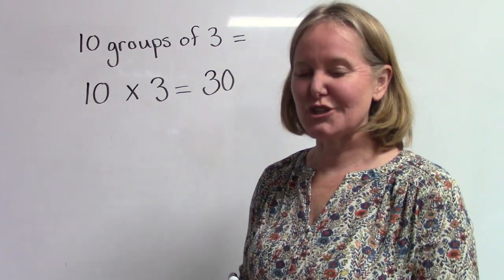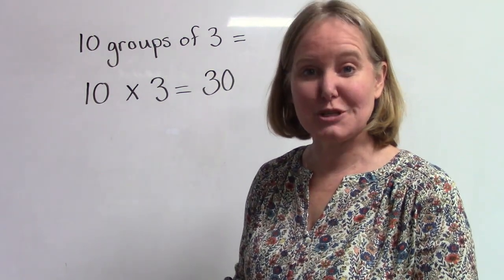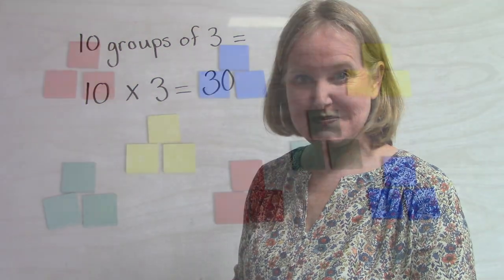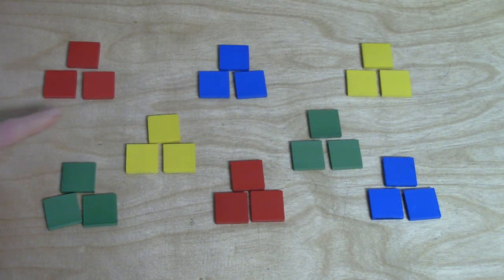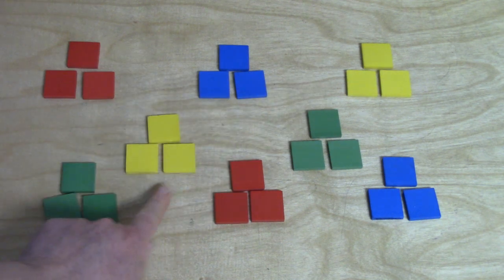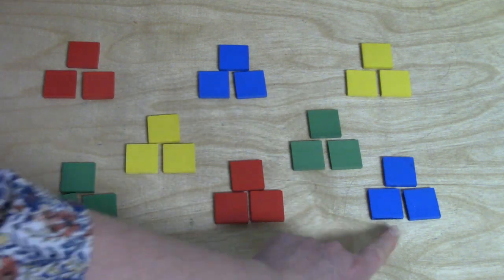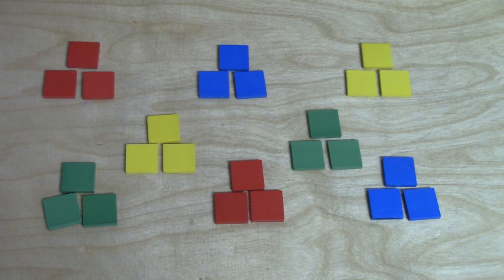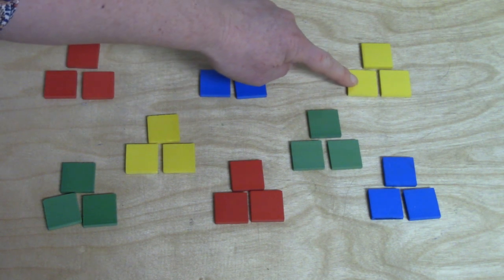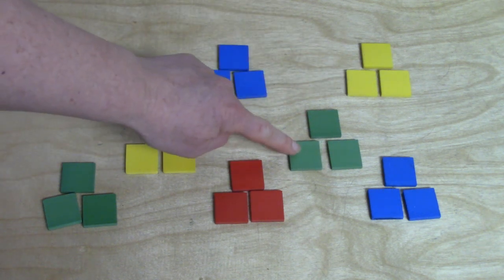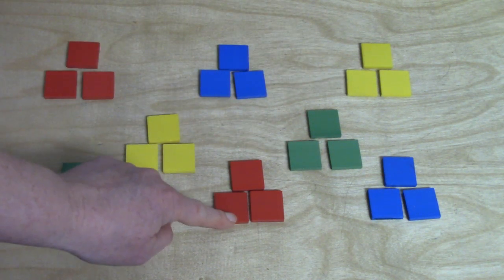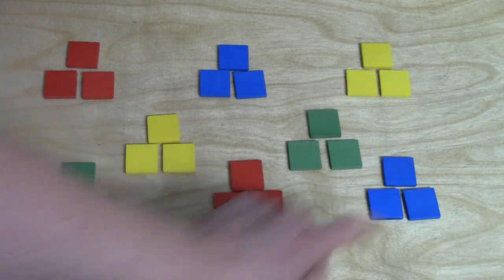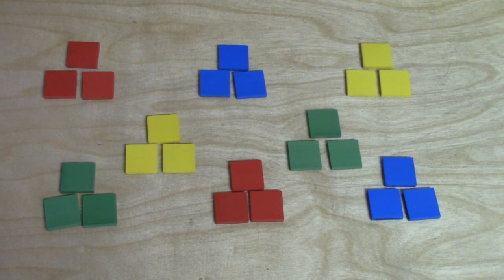Let's take a closer look at some other multiplication problems. Here we have one, two, three, four, five, six, seven, eight groups of three. Let's count them by three: three, six, nine, twelve, fifteen, eighteen, twenty-one, twenty-four. Eight times three is twenty-four.